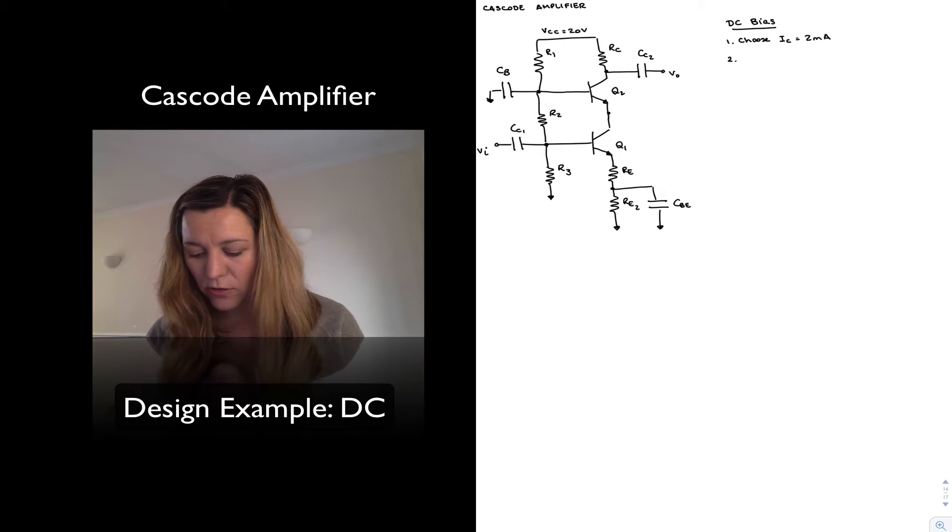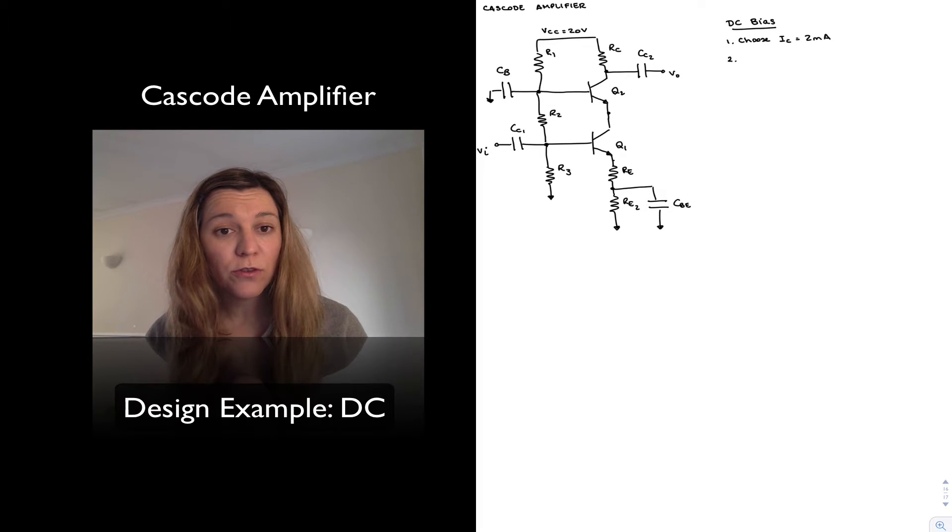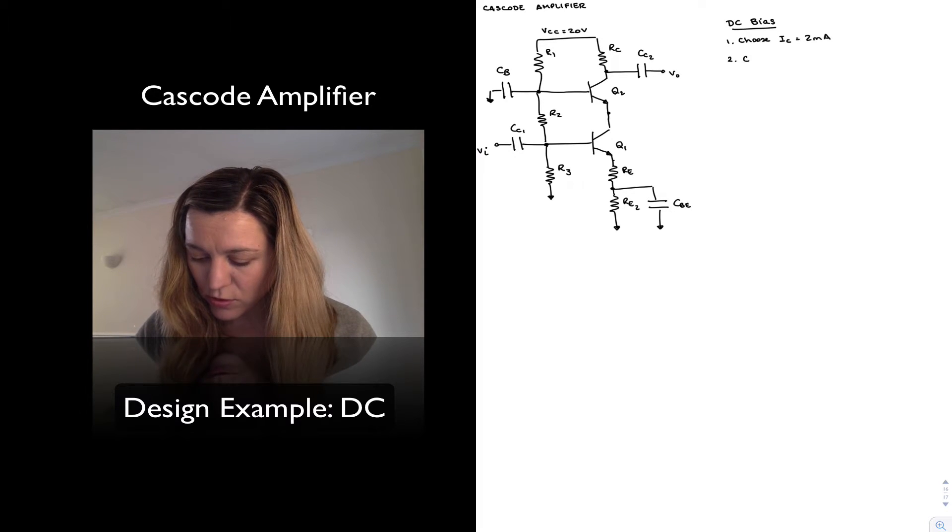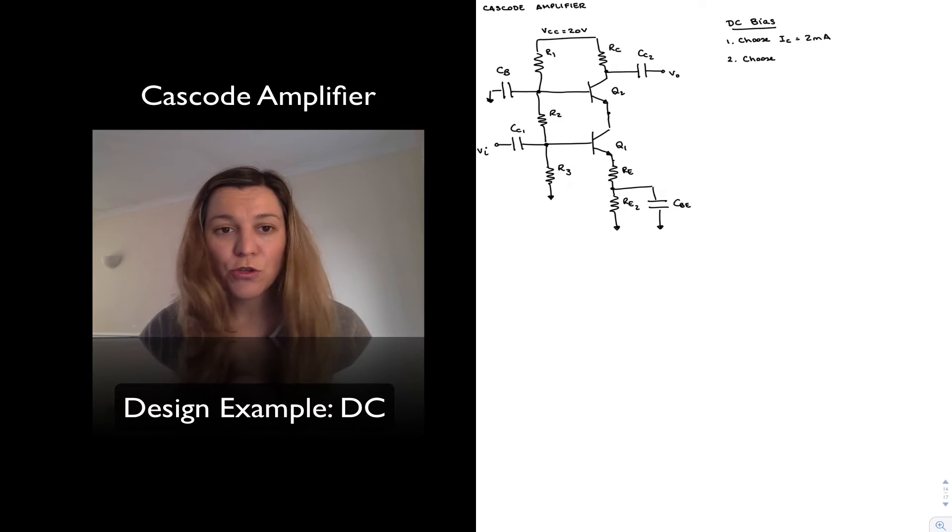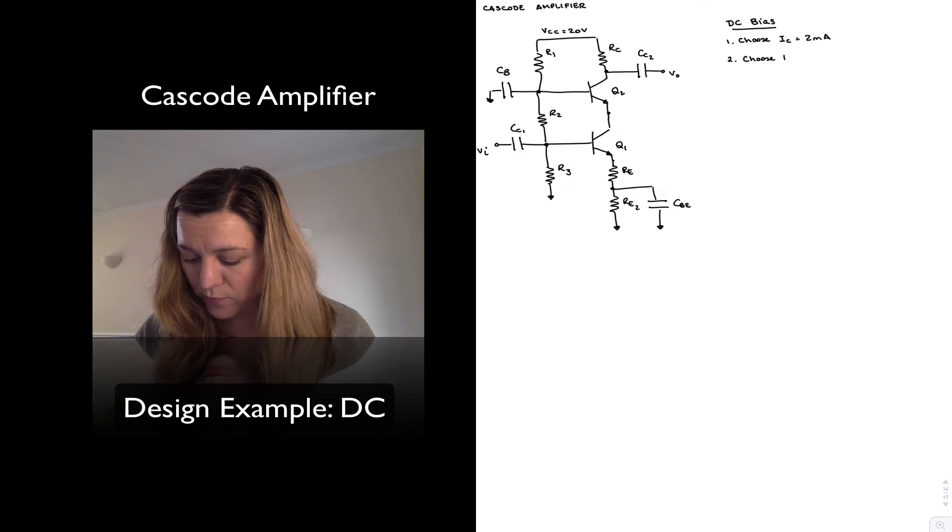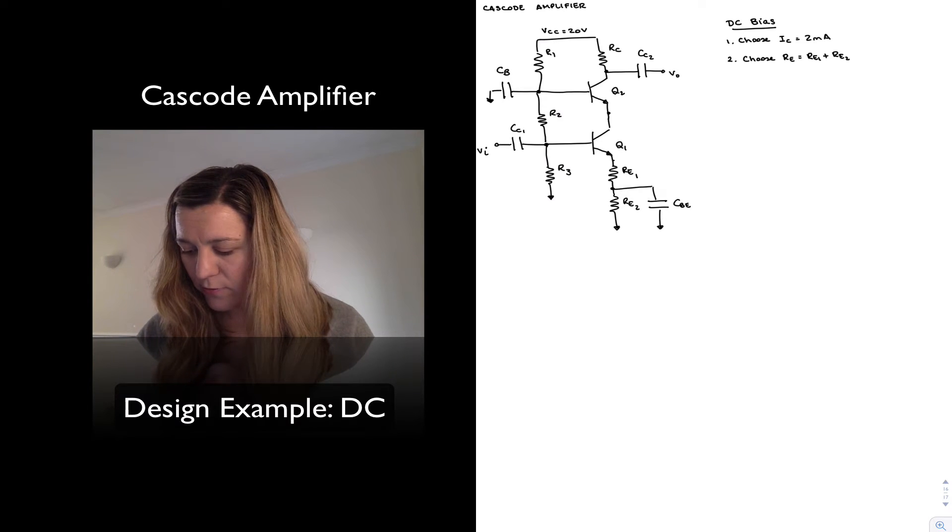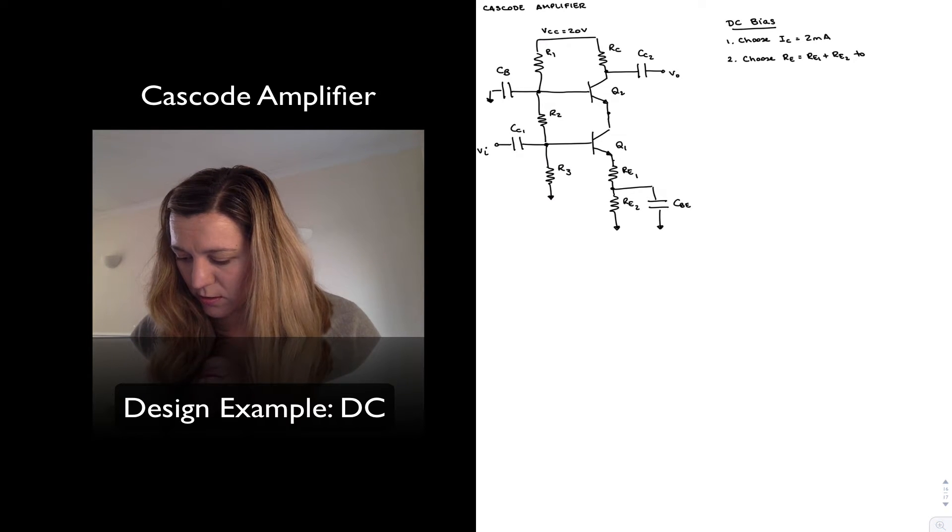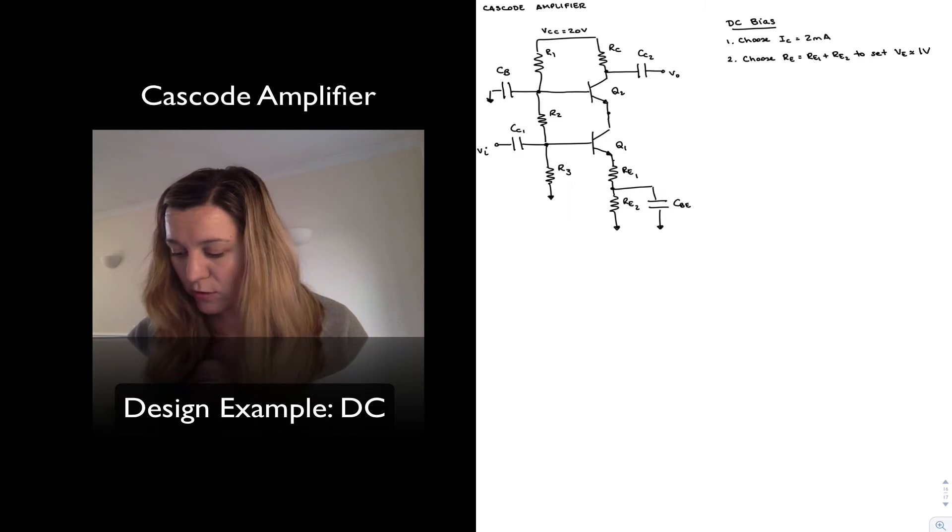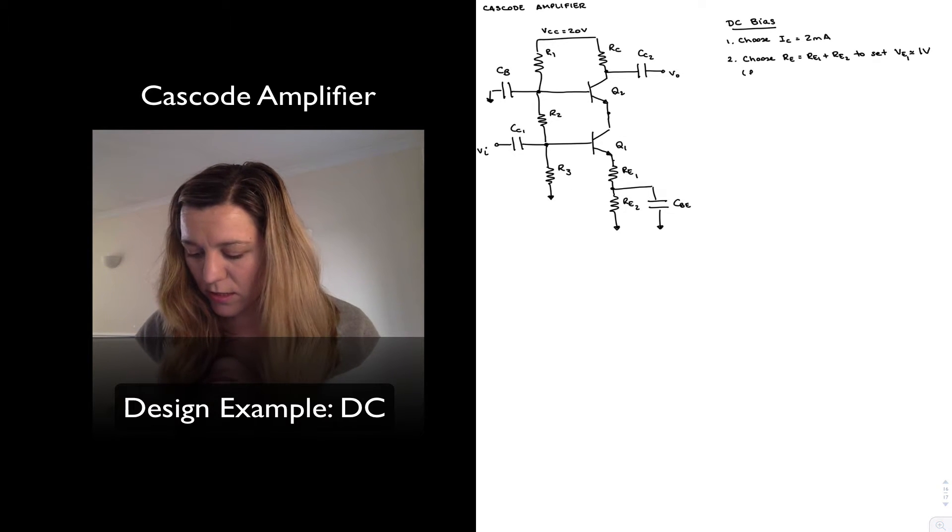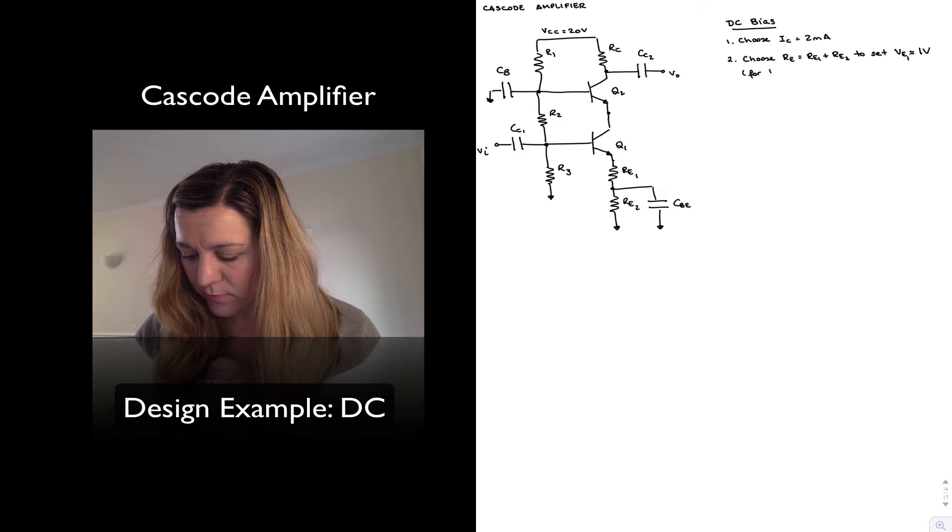Next, I want to set my emitter voltage for the emitter terminal of Q1, VE, or I'm going to say VE1. I want to set it to 1 volt. So I'm going to choose RE, which is the series combination of RE1 plus RE2. That's the overall emitter resistance for DC bias purposes, since the capacitor CVE will act as an open circuit for DC voltages. To set VE equal to approximately 1 volt, I'm going to call this VE1 to avoid confusion. And again, that's just done for DC bias stability.